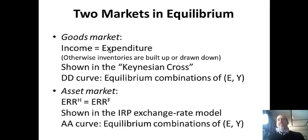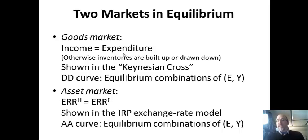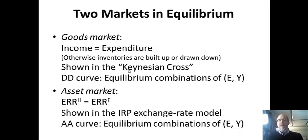In the goods market, the one rule is that income must equal expenditure. When a country earns money and produces, spending should be equal. In disequilibrium, if spending is too high you will draw down inventories, but if spending is too low you're producing more than you're consuming, so you would build up inventories. Equilibrium is when there's no building up or drawing down of inventories. This is shown in the Keynesian Cross. The DD curve has equilibrium combinations of the exchange rate and output that maintain equilibrium for all income levels and all exchange rates.